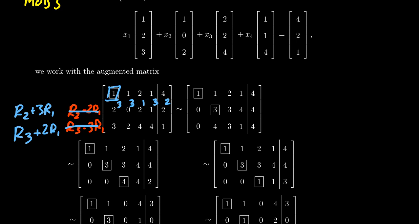For the next row operation, we multiply the first row by 2: getting 2, 2, 2×4=4, 2×1=2, and 2×4=8 which reduces to 3 mod 5. Notice 2 and 3 together give 5, which is 0 mod 5. Then 0+3=3, 2+1=3, 1+3=4, and 2+2=4. For the third row: 3+2=5=0, 2+2=4, 4+4=8 reduces to 3, 4+2=6 reduces to 1, and 1+3=4.